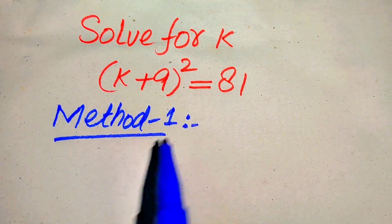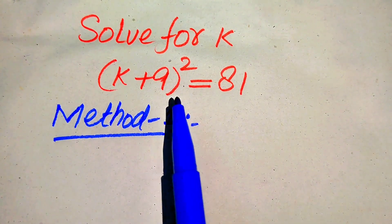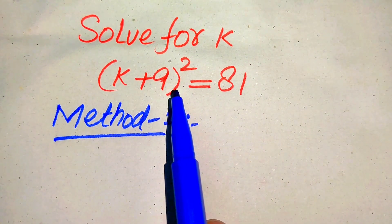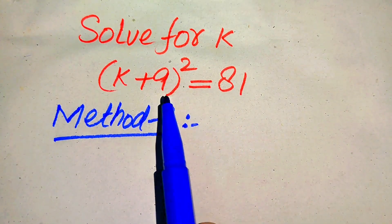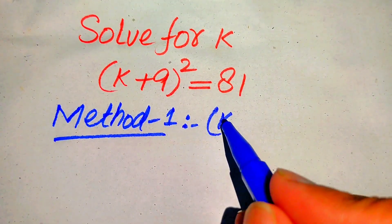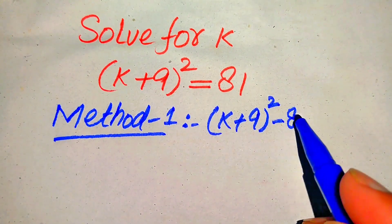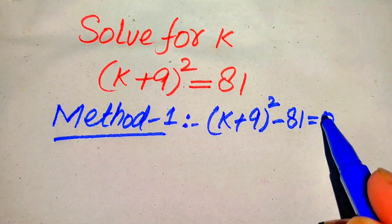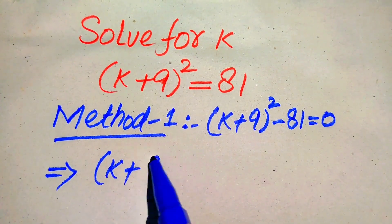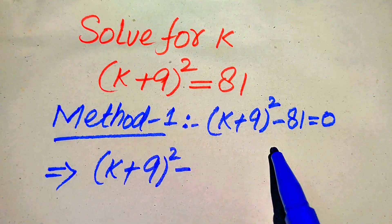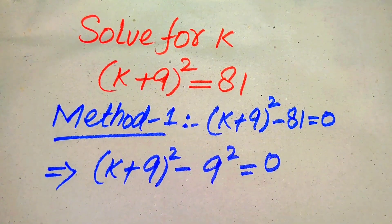In the first method, the very first thing we are going to do is remove the square sign. We move 81 to the left hand side, so it becomes (k + 9)² − 81 = 0. In the next step, we write 81 as 9², giving us (k + 9)² − 9² = 0.